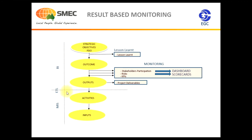If we divide this whole result-based monitoring system into a computer-based system, it has three parts. One is the MIS part, which comprises inputs and activities. Then there is the ETL part — ETL stands for Extract, Transform, and Load tools. And then the BI part — BI is Business Intelligence — which provides the means for monitoring. The output of all this exercise will be project deliverable reports, KPIs, risk monitoring, dashboards, and scorecards.